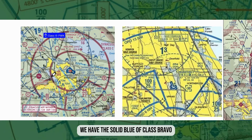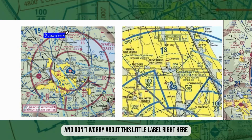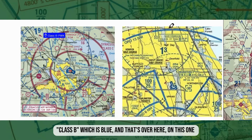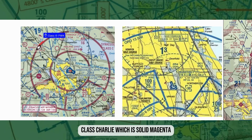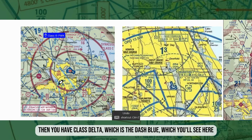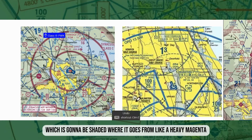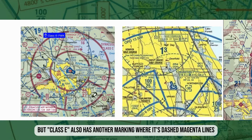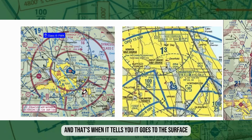We have the solid blue of Class Bravo. Class Charlie is solid magenta. Class Delta is the dashed blue. Class Echo is shaded, going from a heavy magenta where the line fades — that's Class Echo. Class G has no markings, but Class E also has another marking: dashed magenta lines, which indicate it goes to the surface.